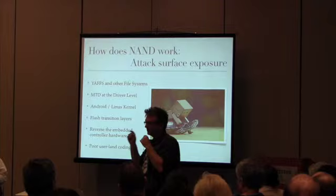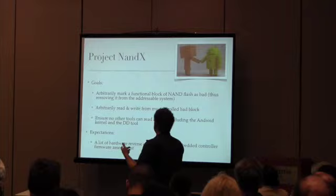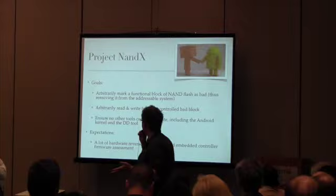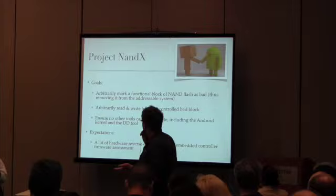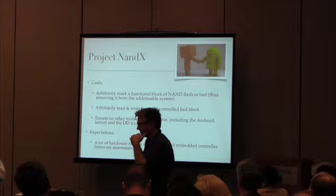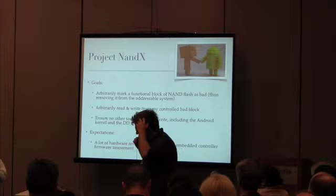Here are all the attack surfaces up and down the chain from hardware all the way up to user land that we could poke at to start marking things bad. So, Nandex: I'm going to arbitrarily mark blocks of NAND as bad. Once I do that, I want to be able to read and write from them still, but I don't want anything else to be able to do it. If they get marked bad, they automatically disappear off everyone else's radar. All I need to do is mark it bad and still be able to read and write. I want to make sure forensics tools won't work against this — even things like DD can't pull my data. If I'm trying to do something really advanced and protect that $20 million investment, I don't want to be found ever.